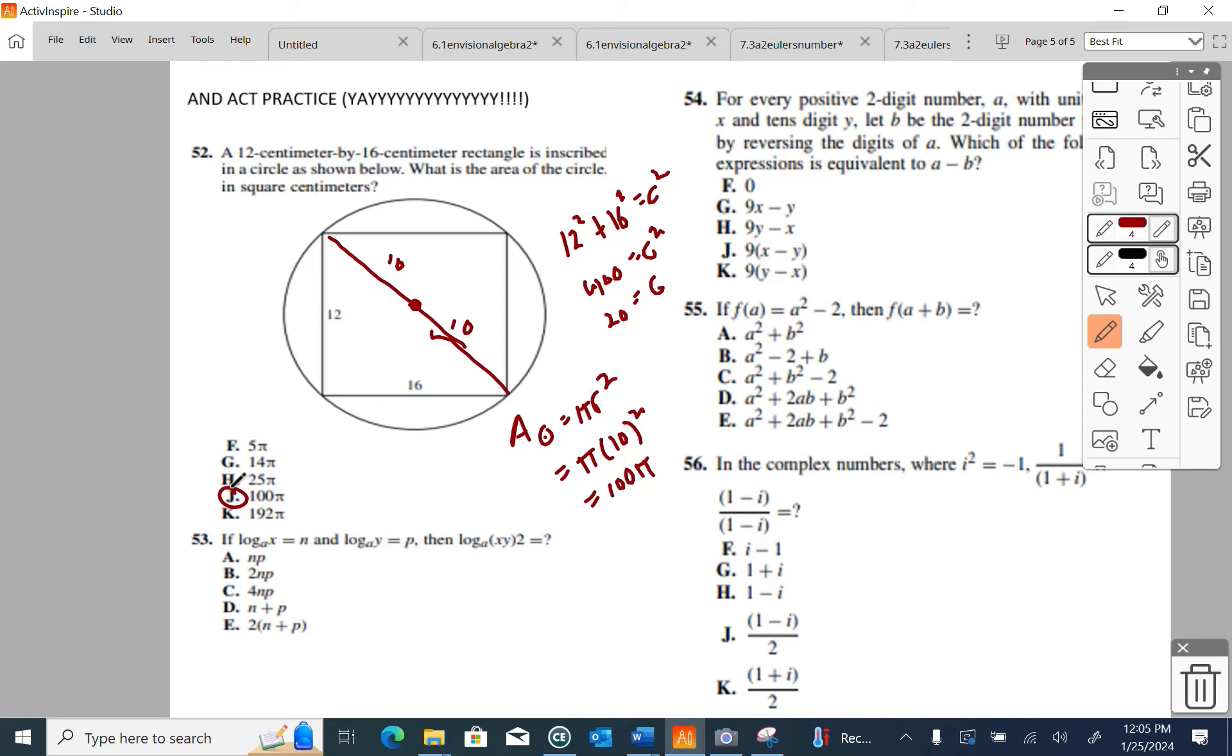So, if log base A of X is N, and log base A of Y is P, then log base A of X times Y times 2 must be what? So this is a property in logarithms. It's on your formula quizzes. Somewhere you have log ABC equals log A plus log B plus log C.